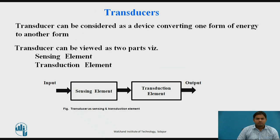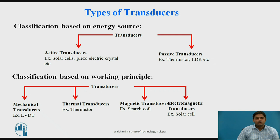Let us discuss the types of transducers. The first classification is based on whether an energy source is required or not. If an energy source is required, it is a passive transducer; if no energy source is required, it is an active transducer. Examples of active transducers include solar cells and piezoelectric crystals, while thermistors are an example of passive transducers.